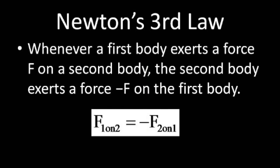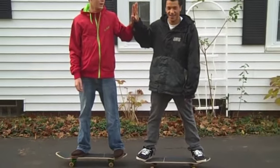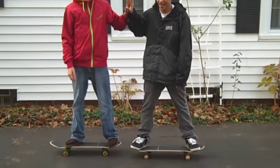Newton's third law states that whenever a first body exerts a force F on a second body, the second body exerts a force minus F back on the first body. That force is equal in magnitude and opposite in direction to the original force. This can also be written mathematically as the force of object 1 on 2 is equal and opposite to the force of 2 on 1. This is more commonly known as the law of action-reaction. For every action, there is an equal and opposite reaction.